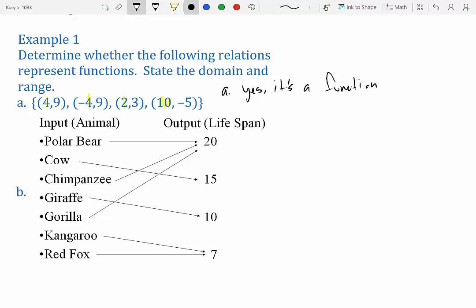Now we want to state the domain and range. So the domain is all your x values, the range is all your y values. So domain, you don't have to put it in numerical order. I was never told you have to, so I doubt you really have to, it doesn't matter. So we have 4, -4, 2, and 10.